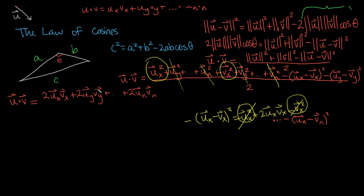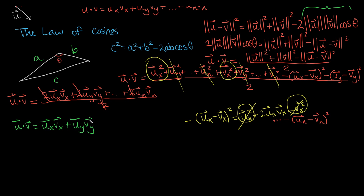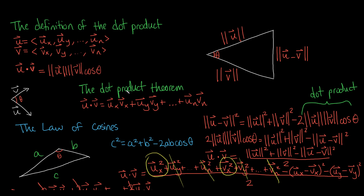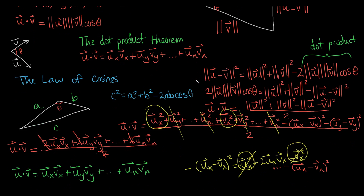Dividing this all by 2, the 2's go away, and it's pretty amazing — we went from this huge equation and by expanding and canceling, we arrive at the final result: u · v = ux·vx + uy·vy + … + un·vn, the dot product theorem, straight out of the law of cosines. That concludes this proof. It's one of the most elegant proofs in math — so simple yet elegant, and I hope it helps you understand and you found it cool.